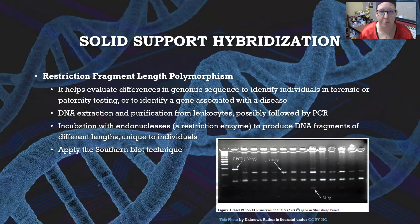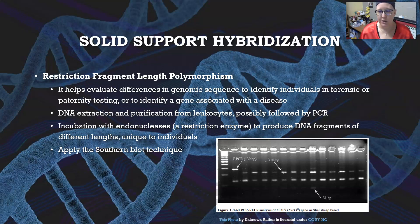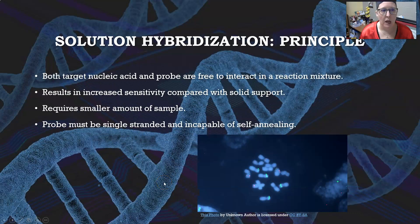Restriction fragment length polymorphism (RFLP) is an application of the Southern blot that evaluates differences in genomic sequence to identify individuals in forensic or paternity testing, or to identify a gene associated with disease. DNA is extracted and purified from leukocytes, possibly amplified by PCR, then incubated with a specific restriction endonuclease. The enzyme produces DNA fragments of different lengths unique to each individual, and the Southern blot technique is then applied to visualize the unique banding pattern.